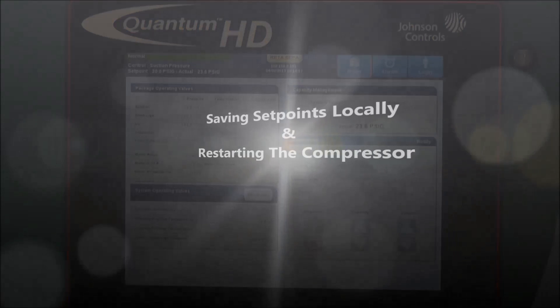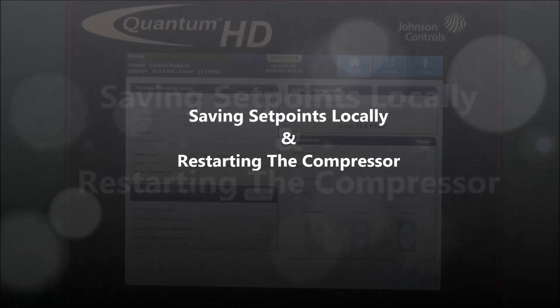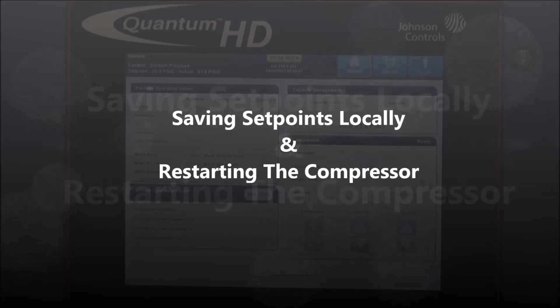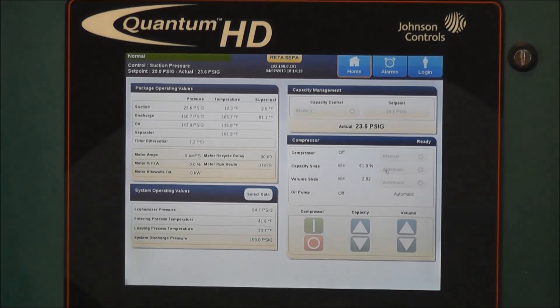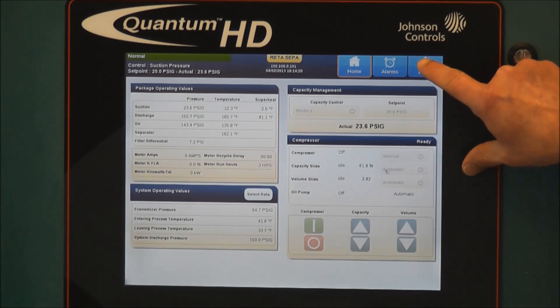Now that we've completed the process of saving setpoints and restoring setpoints using a USB thumb drive, as well as replacing the operating software flash card, I'd like to also show you the process of saving a set of setpoints locally to the operating software flash card. To begin the process, we must first again login.